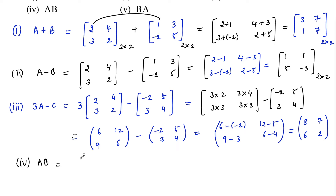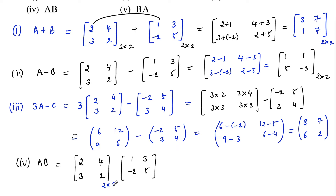The fourth one is AB. Matrix A is 2 4 3 2 and matrix B is 1 3 negative 2 5. Matrix multiplication is possible only when the number of columns in the first matrix equals the number of rows in the second matrix. Both matrices are 2 by 2, so the number of columns in the first equals the number of rows in the second — multiplication is possible.